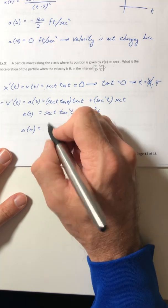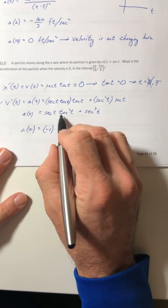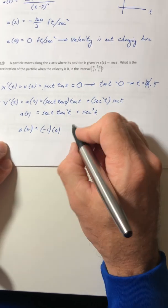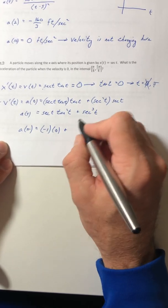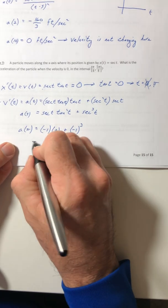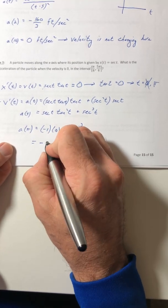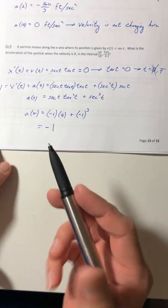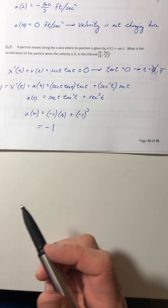So secant of pi is negative 1. Tangent of 0 is 0, and if I squared it you still get 0. Secant of pi is negative 1 to the third, so you get negative 1. Now this one, there are no units in the problem, so you don't need units in your answer.